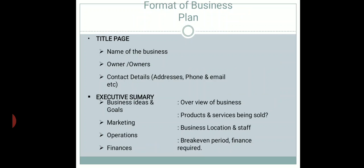When talking about the format of the business plan, first comes your title page, where you mention your company's name, the owner's name — it might be possible that instead of one you have two owners — and contact details like address, phone numbers, and email address. Then comes the executive summary, which contains an overview of the business, the products and services you are selling, your location, number of staff — skilled and unskilled labor — and how you will finance and fulfill your financial requirements.